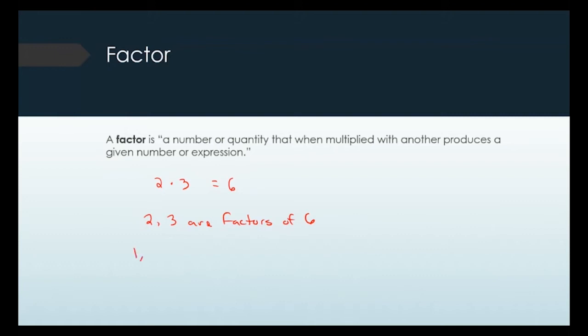We can list all of these factors of 6. Because 1 times 6 gets you 6, and 2 times 3 gets you 6 — every combination of numbers you can multiply together to reach that number are considered its factors.